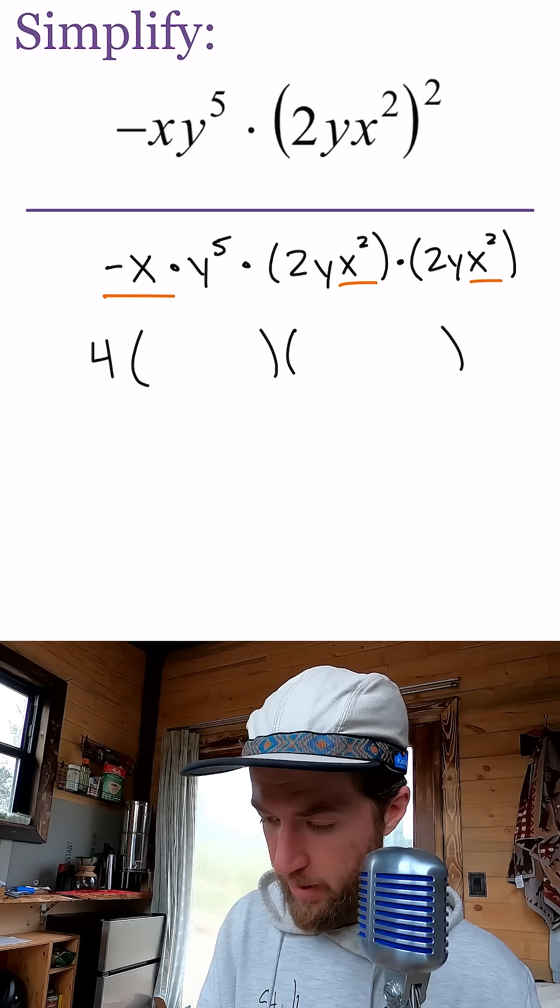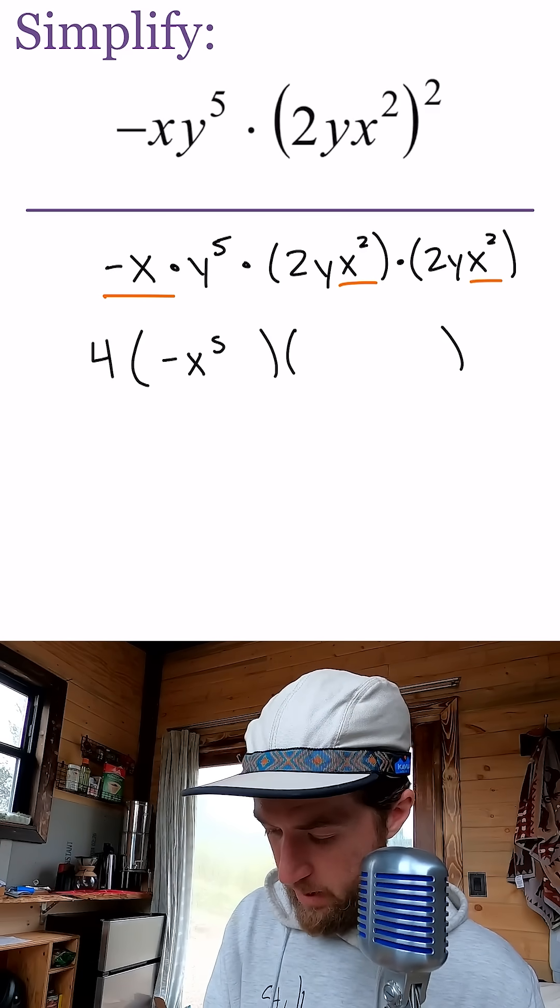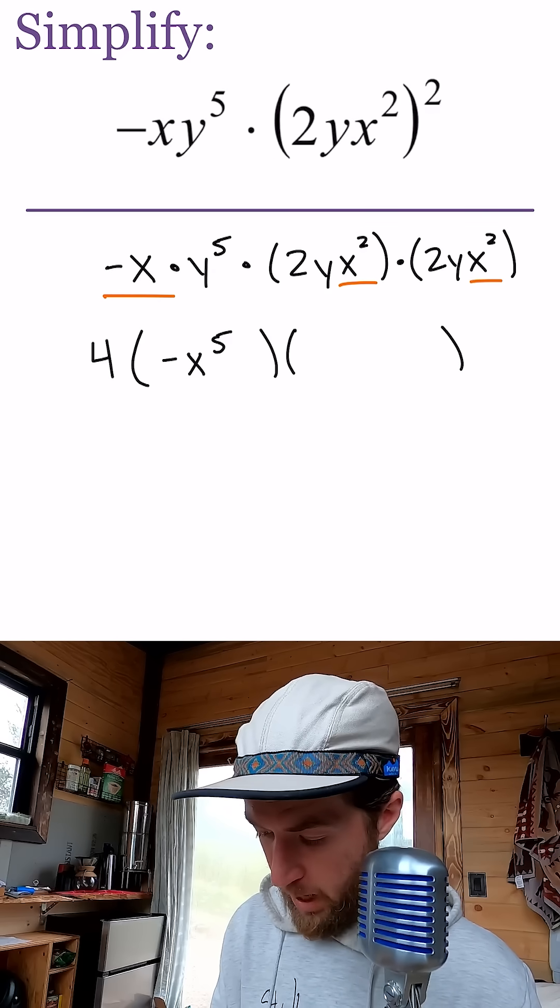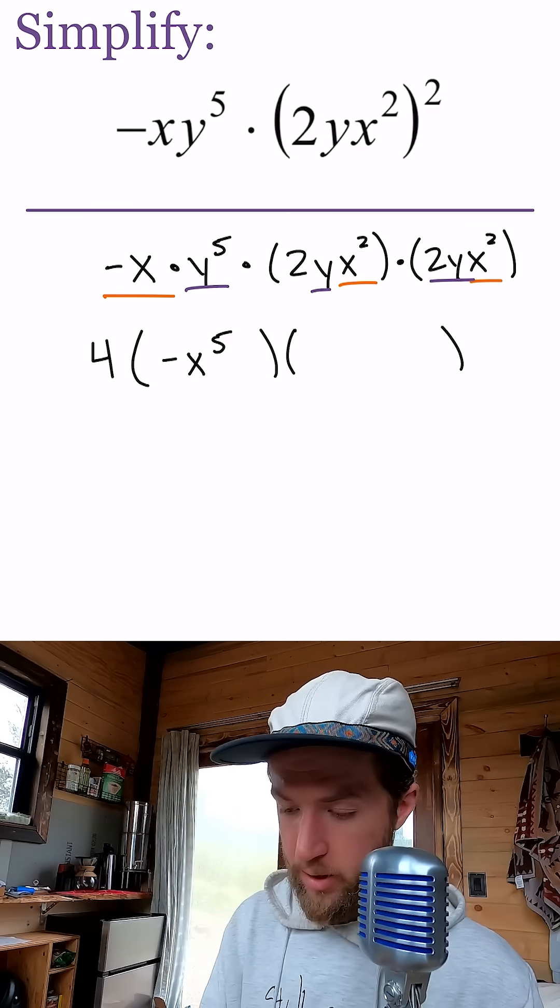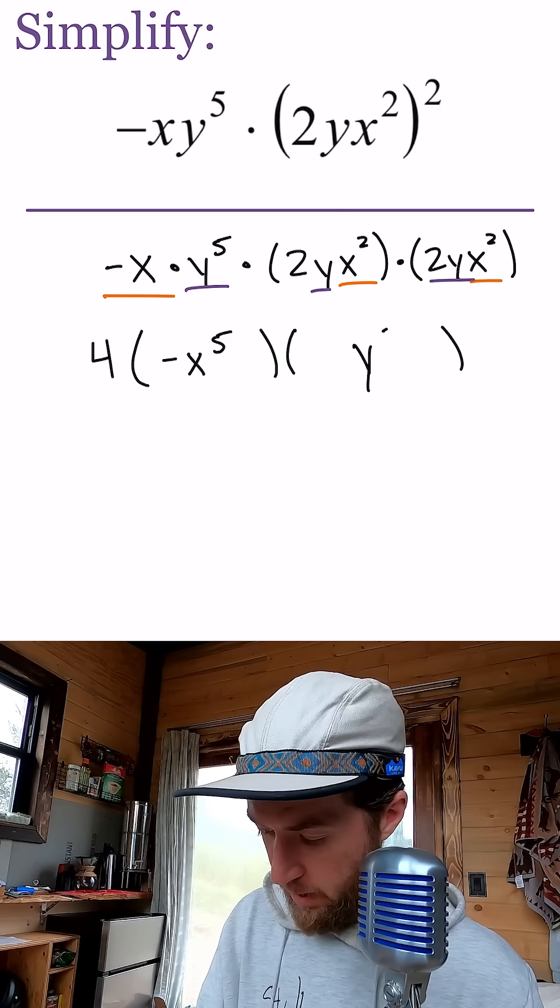And then y's, we have a y to the fifth, a y, and a y. So we have seven y's being multiplied together, y to the seventh.